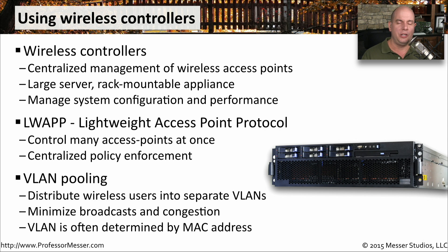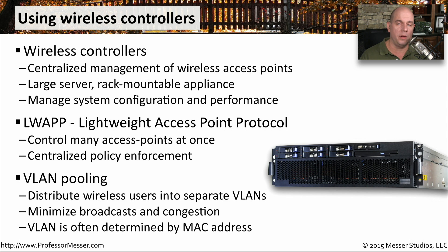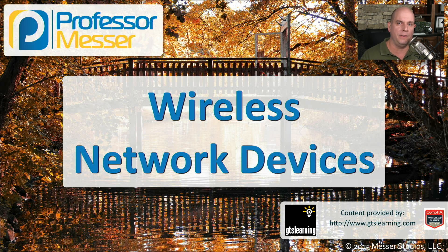These wireless controllers usually use some type of criteria to determine which user goes in which VLAN. A very common criteria is the MAC address — the physical hardware address of the wireless device. The controller examines the MAC address, makes a determination of how to separate out the different devices, and places them into the appropriate VLAN. By doing this, it minimizes the number of devices on a single subnet, reducing how many devices are affected by a broadcast and keeping your wireless networks running at peak efficiency.